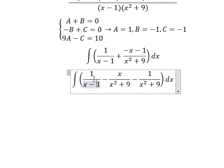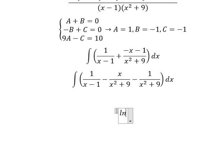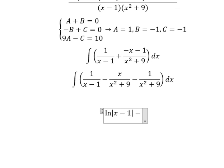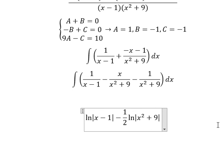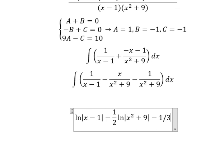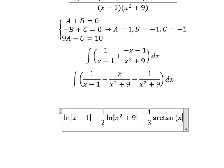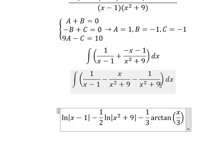The integration of this expression gives us: ln of the absolute value of (s minus 1), minus one half times ln of the absolute value of (s squared plus 9), minus one third times arctan of (s over 3), since the square root of 9 is 3.